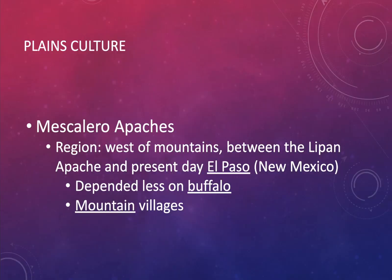The Mescalero Apache are a different group from the Lipan Apache, distinguished by their location. Their region was west of the mountains between the Lipan Apache and present-day El Paso and New Mexico, spreading beyond today's Texas borders. They depended less on buffalo and more on farming, and they were mountain villagers.